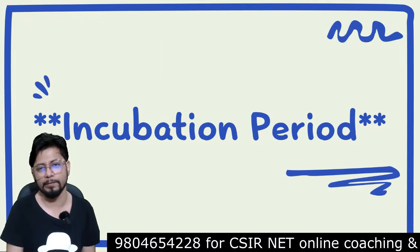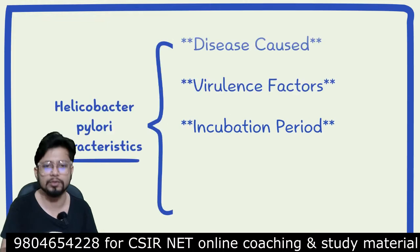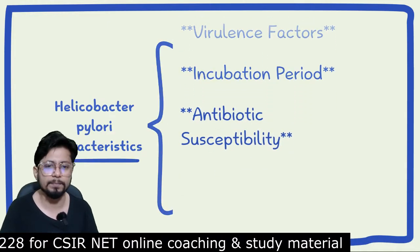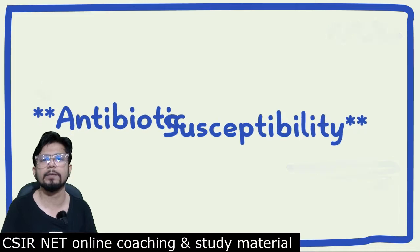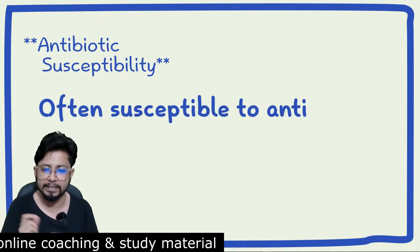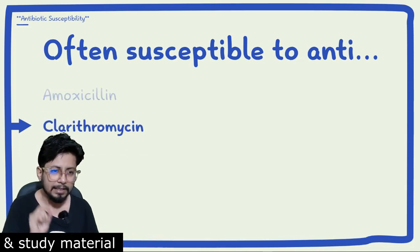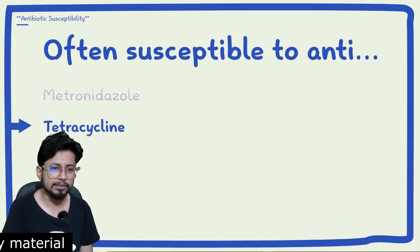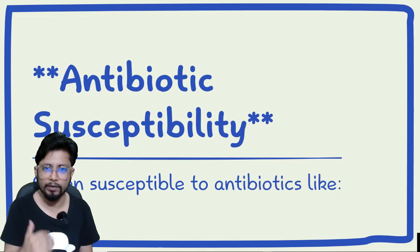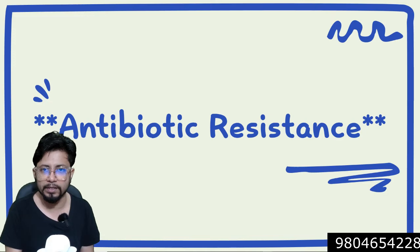The incubation period of Helicobacter pylori is usually a few days to a week. Regarding antibiotic susceptibility, Helicobacter pylori is susceptible to amoxicillin, clarithromycin, metronidazole, and tetracyclines — these are the four categories of antibiotics it is susceptible to.